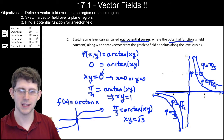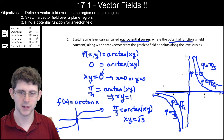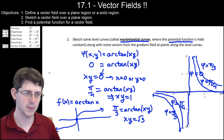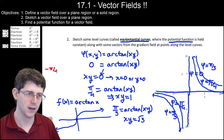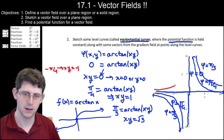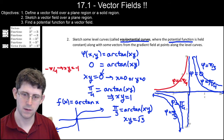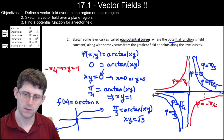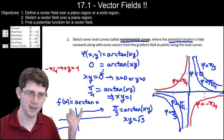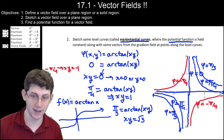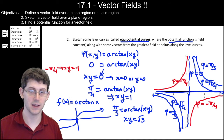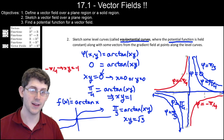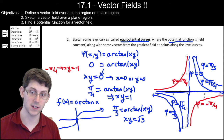In the other quadrants we get curves from negative potentials. For -pi/4, we get xy = -1, which gives hyperbolas in the second and fourth quadrants.